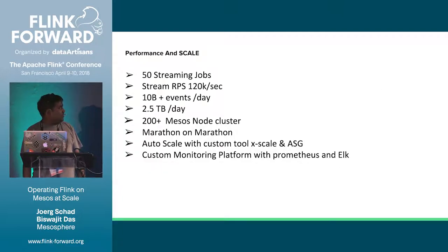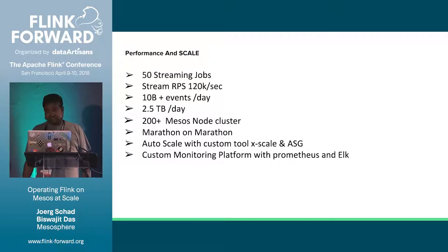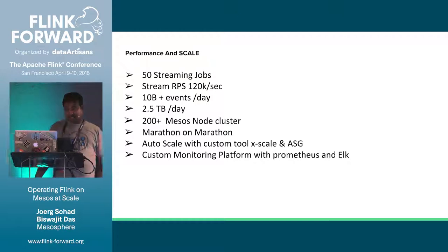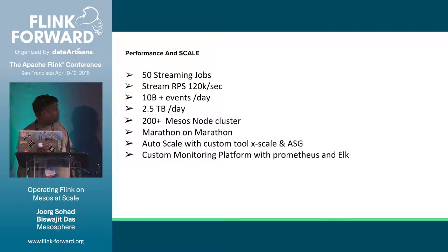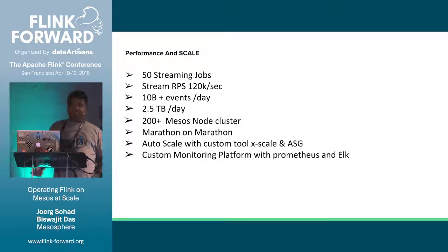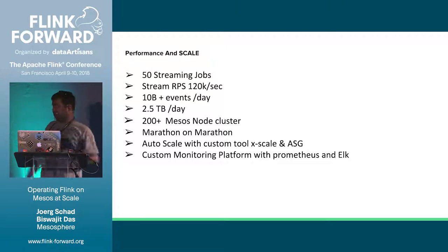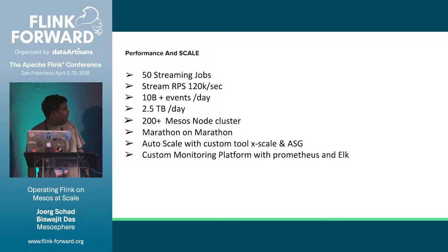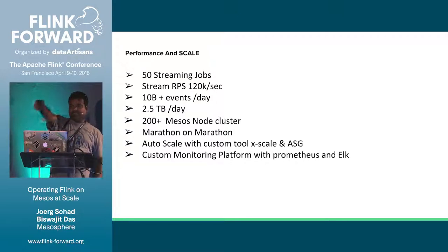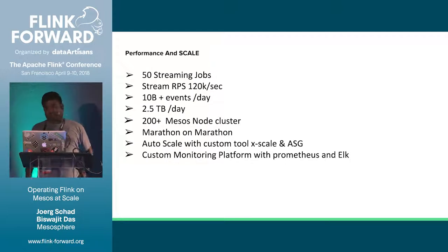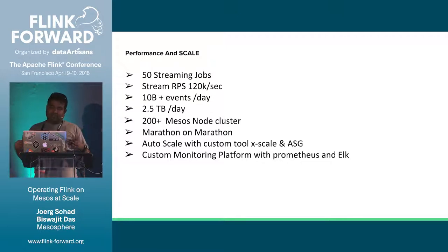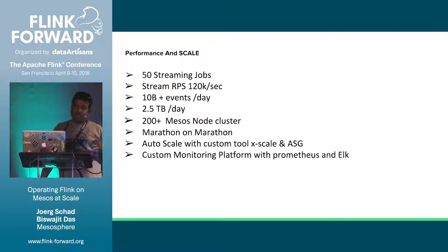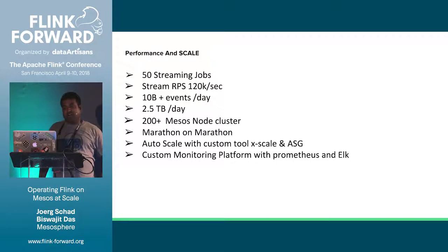Some scale and performance numbers: we run around 50 streaming jobs, all end-user-facing analytics. Peak is 120K RPS, 10 billion events per day, 2.5 terabytes per day. In production we run around 20-plus Mesos cluster nodes. We use a homegrown auto-scaling solution called Xscale, plus ASG for scaling the Mesos cluster itself. Flink jobs emit metrics collected by a homegrown tool called Scopus, which sends metrics to ELK and Prometheus for alerting and management.